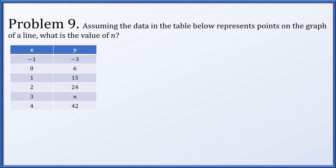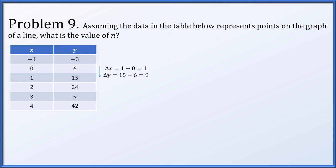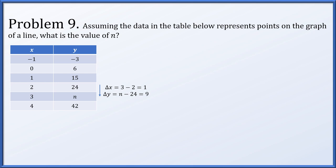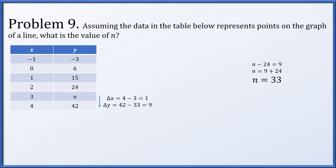Problem nine: assuming the data in the table represents points on a line, find the value of n, where when x equals 3, y equals n. Going row by row, each time x increases by 1, y increases by 9. So when x increases by 1 to reach 3, y must increase by 9 from 24, giving n equals 33. We can verify: 42 minus 33 is 9, preserving delta y equals 9 whenever delta x equals 1.